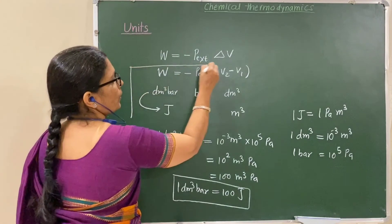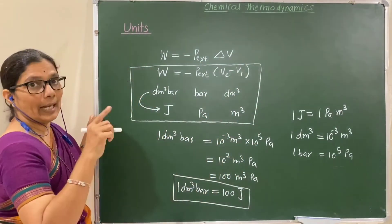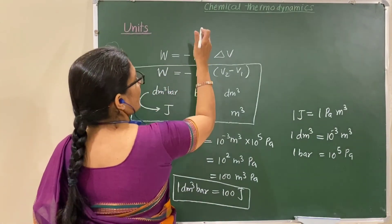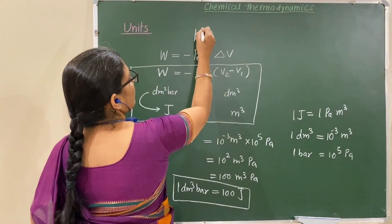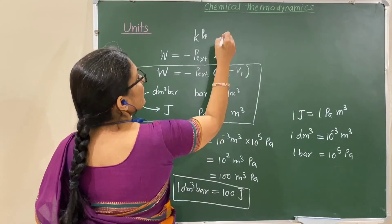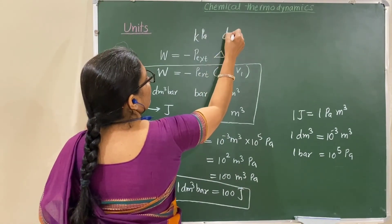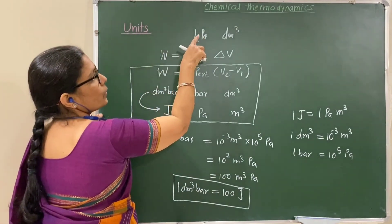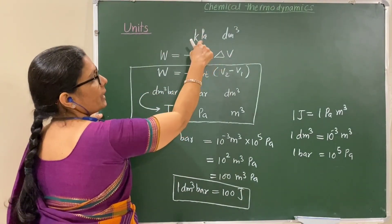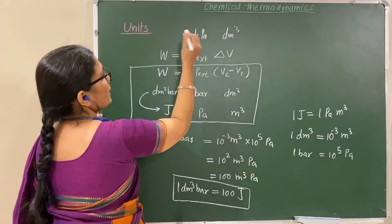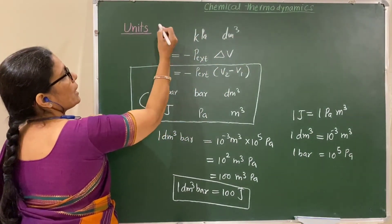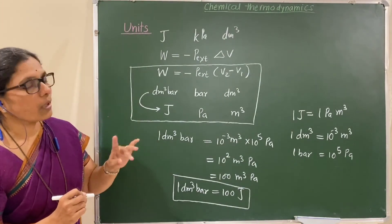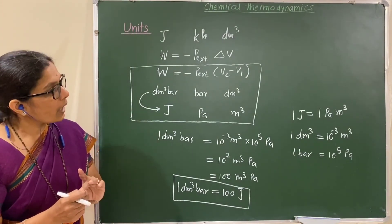This conversion is very important when solving numericals. If the additional data gives pressure in kilopascal and volume in dm³, then the unit of work is kilopascal·dm³. Since kilopascal is Pascal × 1000 and dm³ is meter cube ÷ 1000, they cancel, giving the result in Joules. Remember this to solve numericals.